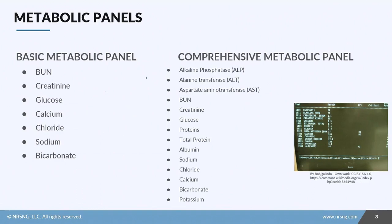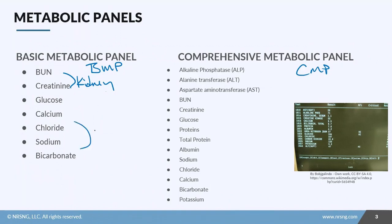Let's start off with two basic panels. You have the Basic Metabolic Panel, or BMP, and the Comprehensive Metabolic Panel, or CMP. They're very similar in some of the tests they run. When looking at your BMP, it gives you a snapshot of kidney function through your BUN and creatinine, which tell you what's going on with the kidneys, along with electrolyte values and your glucose test.